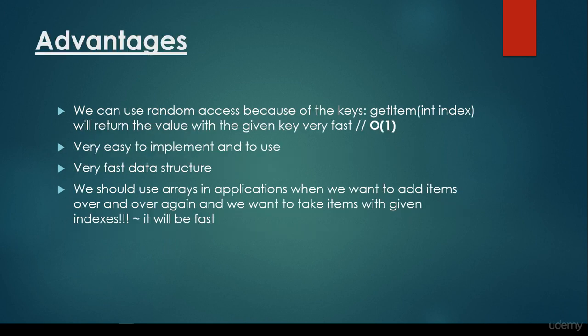So what are the advantages of arrays? We can use random access because of the keys. So we will see the getItem method or something like this. It can have the name get or whatever. What's important is that we have to specify an index or a key and it will return the value with the given key very fast in constant time complexity.